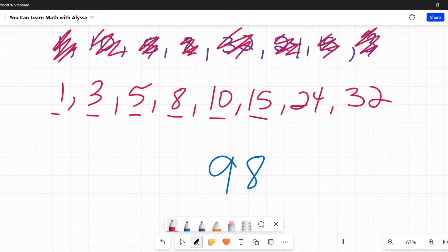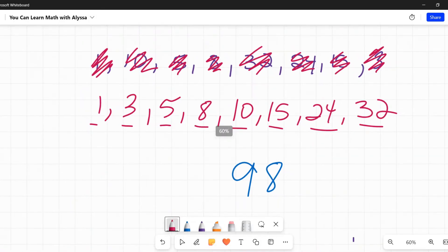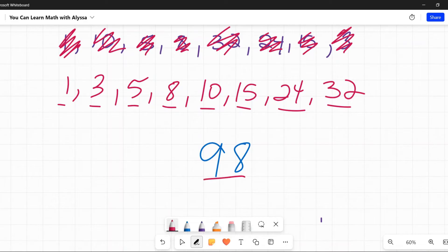1, 2, 3, 4, 5, 6, 7, 8 values in our data set. So we need to divide 98 by 8 to find our mean. That goes in there 12 times with 2 left over, 2 eighths, which simplifies to 1 fourth, or as decimals, 12.25.